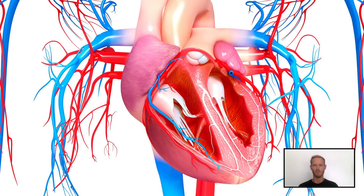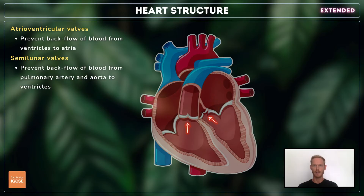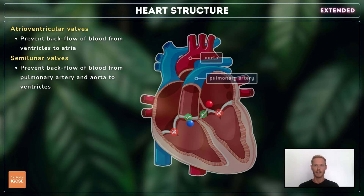Moving on to the extended section, beginning with some additional information on the structures of the heart. There are four valves in the heart that prevent the backflow of blood. Two atrioventricular valves sit between the atria and ventricles, and two semilunar valves can be found at the entrances to the major arteries. As the ventricles contract, blood pressure increases, causing the atrioventricular valves to close and the semilunar valves to open. As a result, blood moves from the ventricles and into the pulmonary artery and the aorta. When the ventricles relax, the semilunar valves close due to blood pressure in the arteries, preventing blood from flowing backwards into the ventricles.